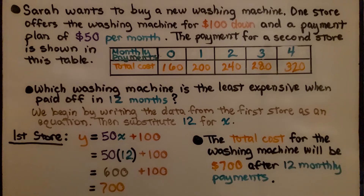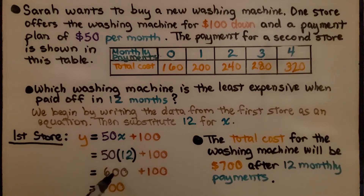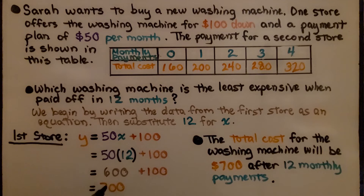We substitute 12 for x to find the cost after 12 months: 50 times 12 = 600, plus the $100 down payment gives us $700. The total cost for the washing machine at store one will be $700 after 12 monthly payments.